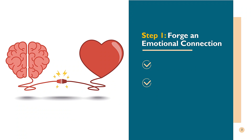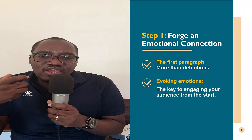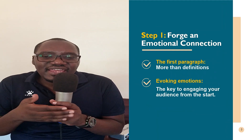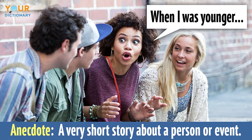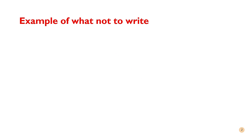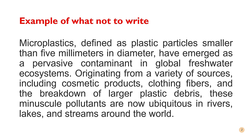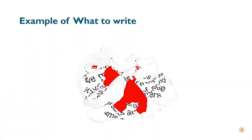Instead of giving an overview of the topic and definitions, put statements that are going to appeal to the reader's emotions. This is done by giving startling statistics, relevant anecdotes, and thought-provoking ideas in your first paragraph. Let's look at an example of how to write the first paragraph.